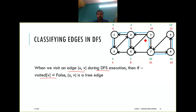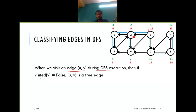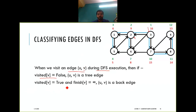For example, starting from node 3 we discover node 2. Since 2 is not yet visited, the edge 3→2 becomes a tree edge. Whenever you explore an edge and find the destination is not yet discovered, that edge becomes a tree edge.